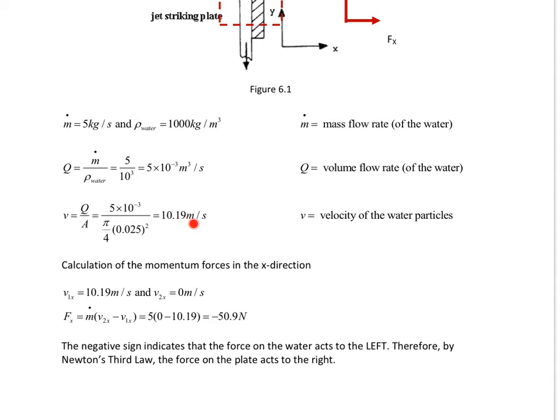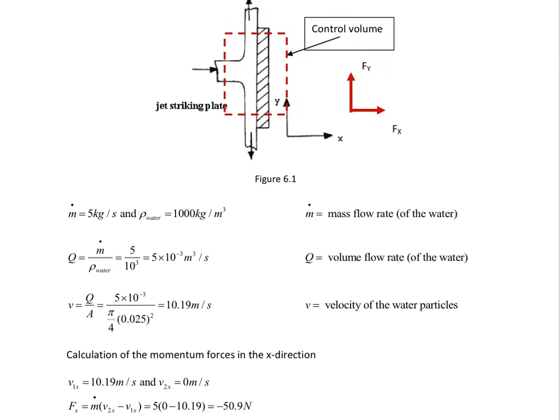Now, the calculation of the momentum force is extremely straightforward, but we have to be very careful. We are told that in the X direction, the velocity is 10.19 meters per second, but leaving, we do not have any velocity leaving in the X direction. And that's where our control volume becomes extremely important for us to focus.